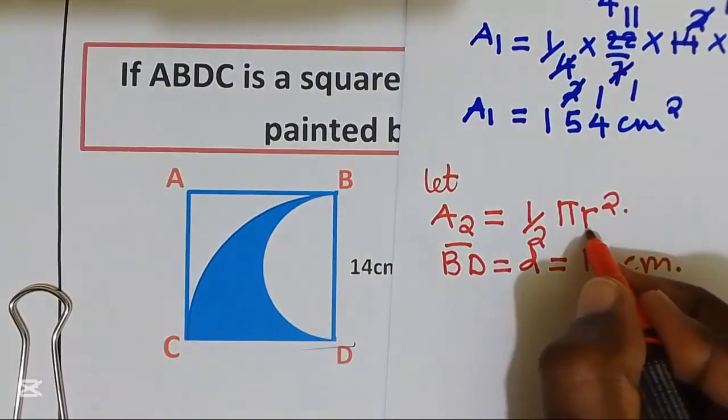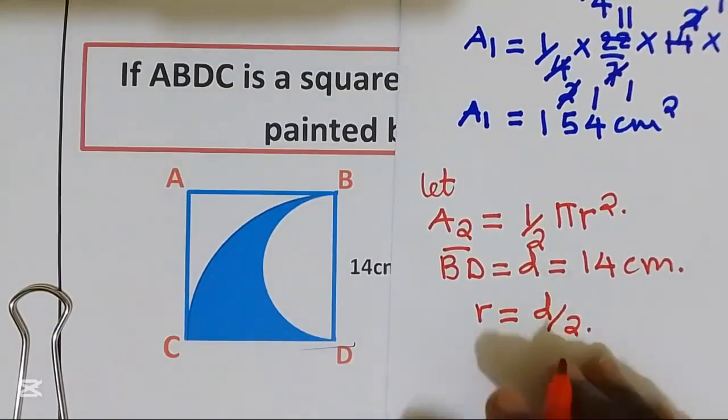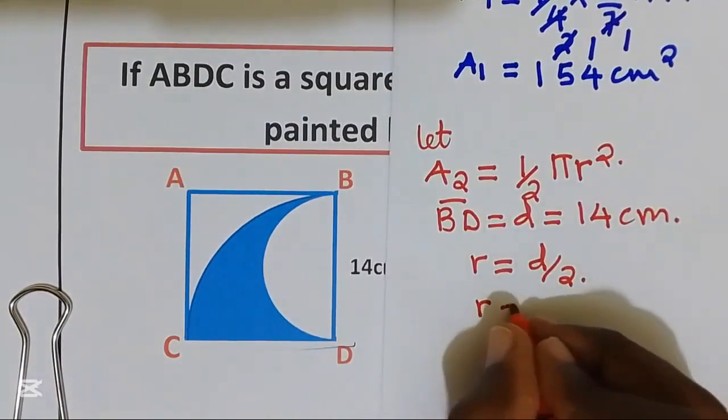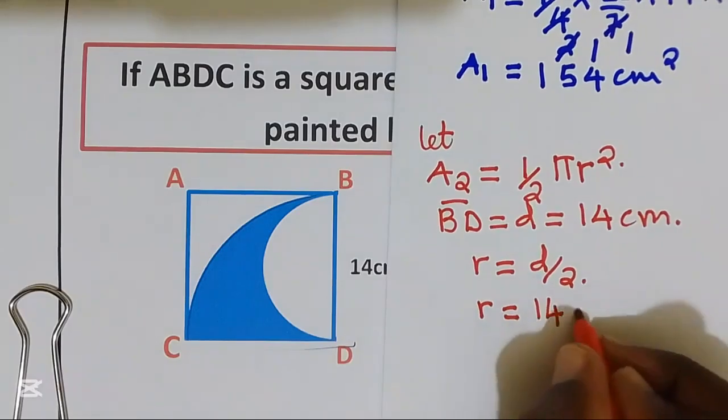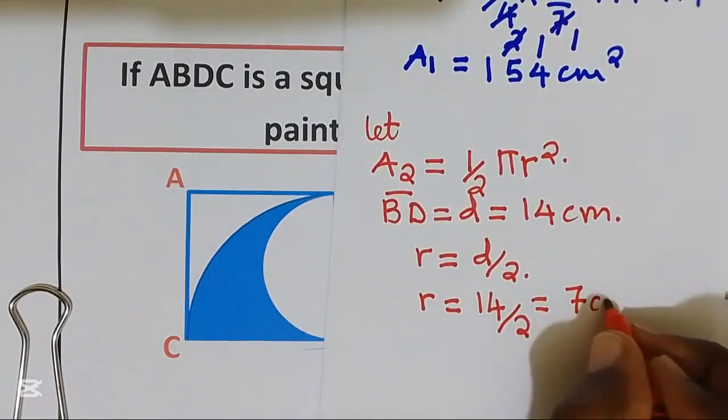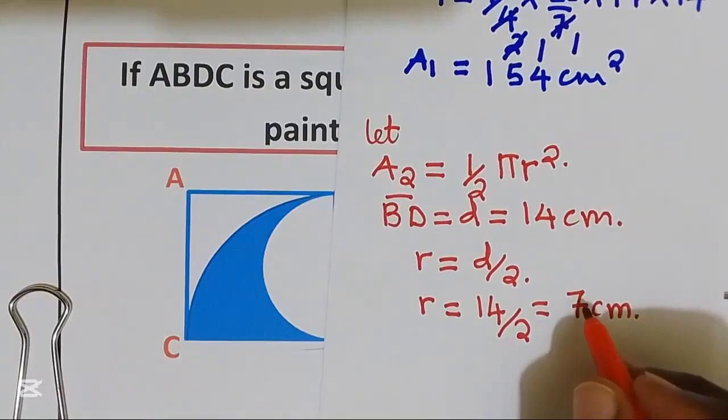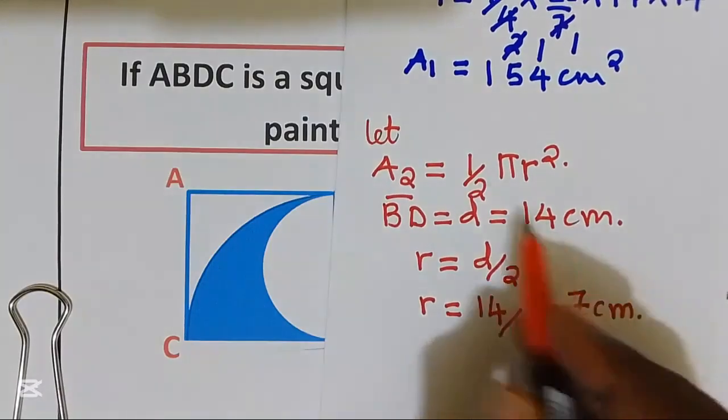But we are looking for r here. r is equal to d over 2. Our radius is equal to 14 divided by 2, that gives us 7 cm. Let us substitute the value of radius equal to 7, and pi of 22 over 7, to our formula.